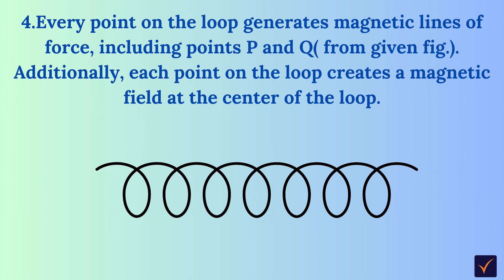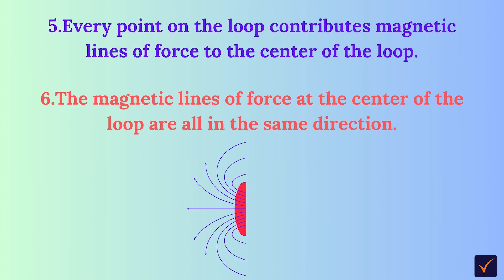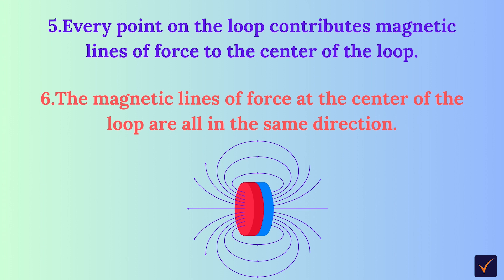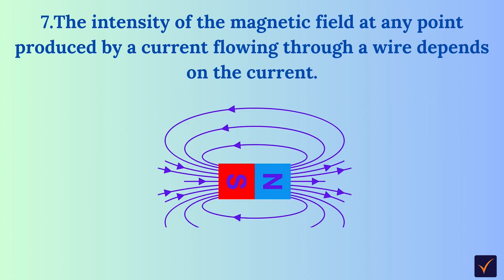Each point on the loop creates a magnetic field at the center of the loop. Every point on the loop contributes magnetic lines of force to the center of the loop. The magnetic lines of force at the center of the loop are all in the same direction — you will observe that all magnetic lines of force are in one direction. The intensity of the magnetic field at any point produced by a current flowing through the wire depends on the current.